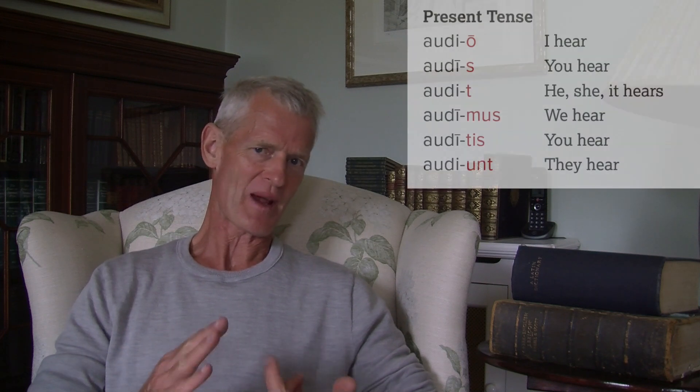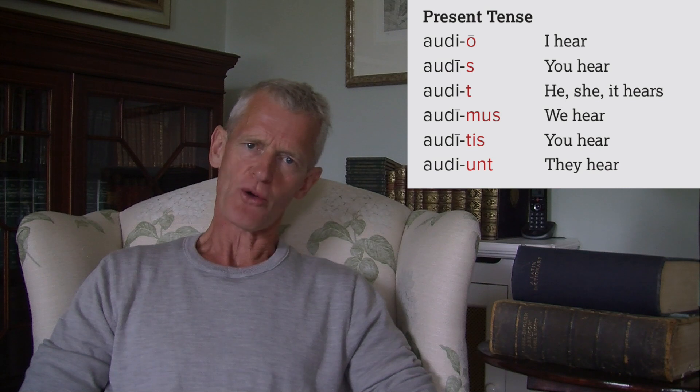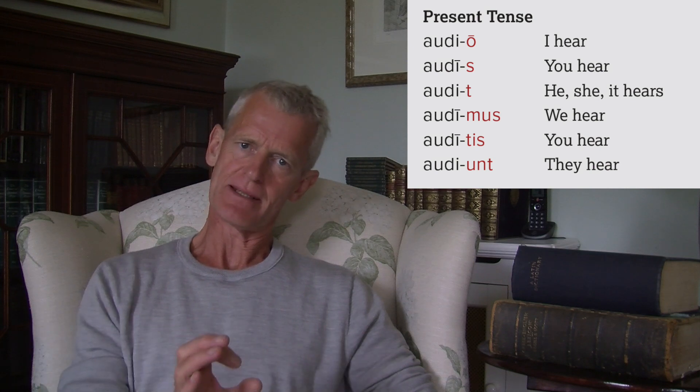The endings in the present tense — you're not going to have any difficulty with at all. It's the same old friends: o, s, t, mus, tis, unt. There's a little bit of funniness because you've got this -i at the end of the stem. So it's: audio, audis, audit, audimus, auditis, audiunt. That final one, the third person plural, has got -unt on the end of the stem, audi-.